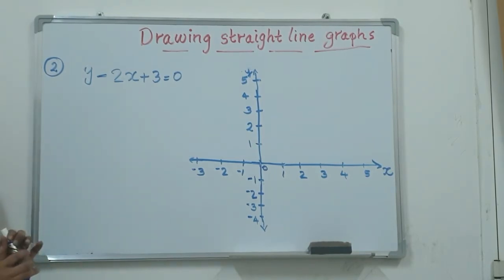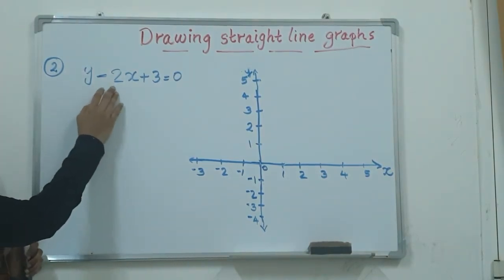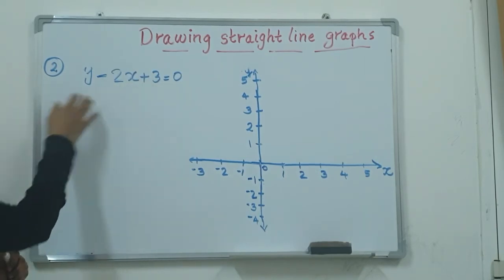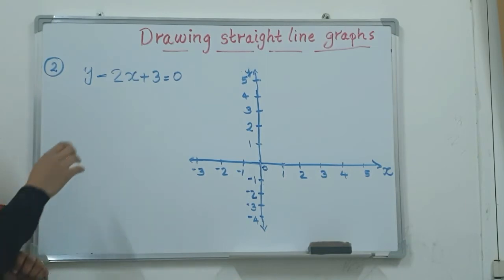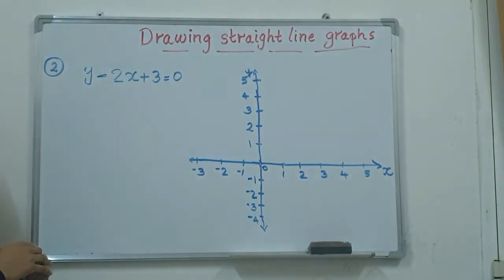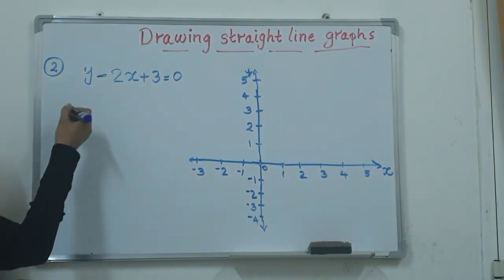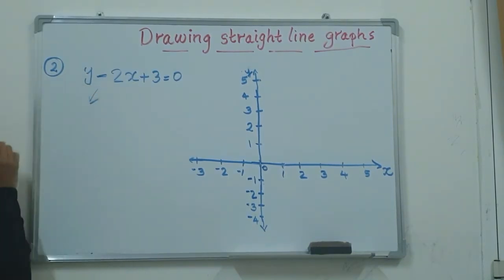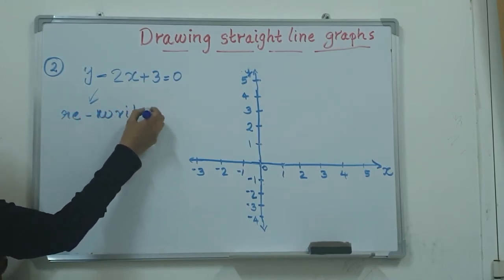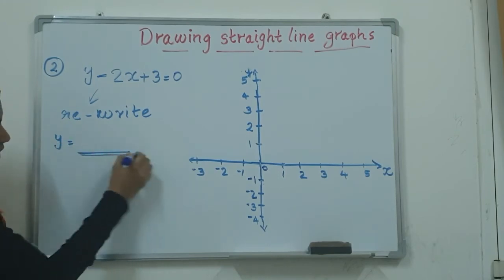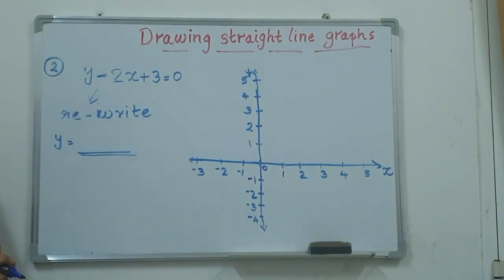Let's consider another example: y minus 2x plus 3 equals 0. In this example the relationship between x and y is not given directly. We have to rearrange the given equation to get the relationship between x and y explicitly, in the form y equals something.